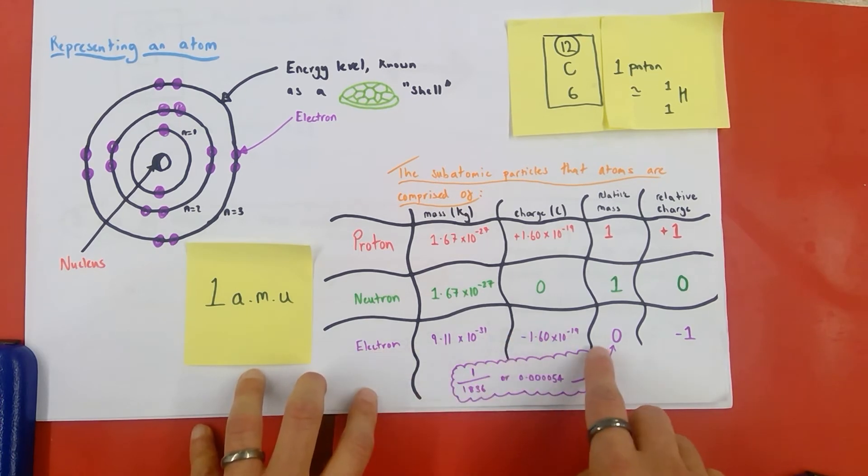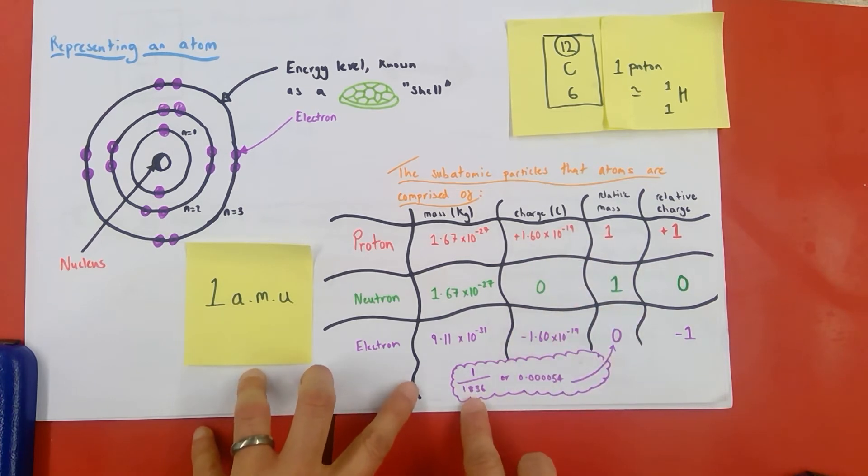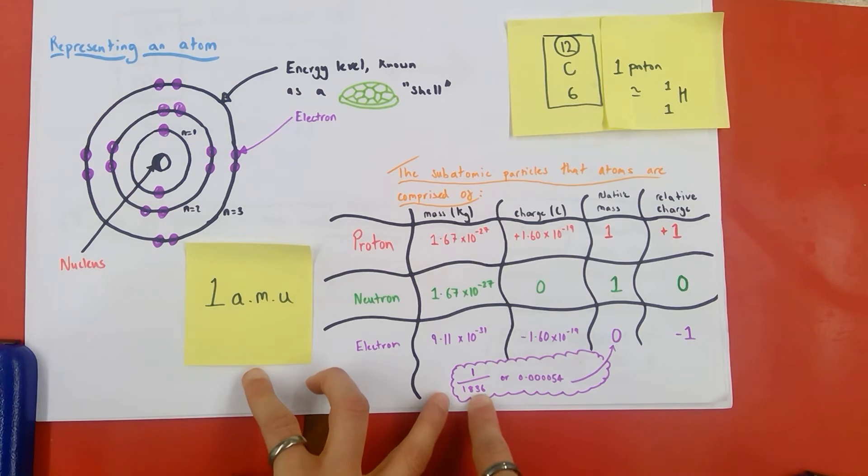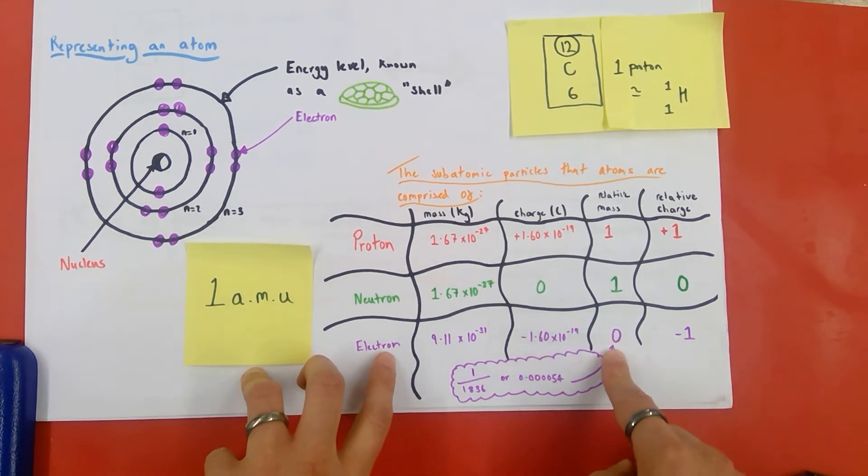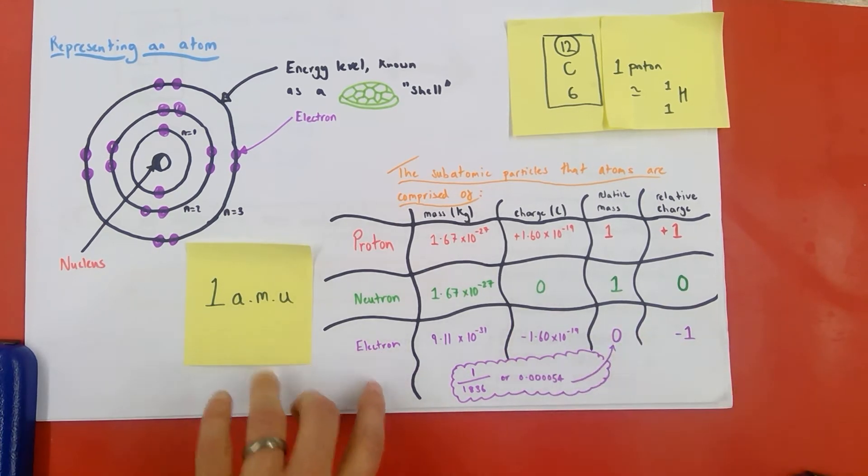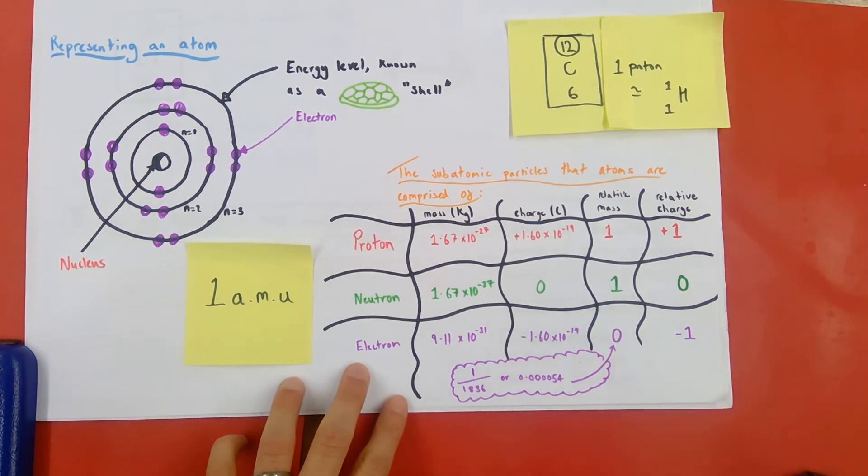Electrons, as you can see from the size here, they are much, much smaller than protons and neutrons. Specifically, they are 1,836 times smaller than either a proton or a neutron. If you struggle to remember 1 over 1836 as a ratio or scale, just imagine the number is essentially zero. Electrons have almost no mass on this scale, on this relative mass scale. They are negligible or zero mass. But they do still have a charge. Their charge is minus 1 compared to that of a proton, which is plus 1. So they have the exact opposite charge of a proton.